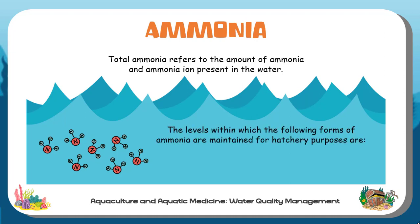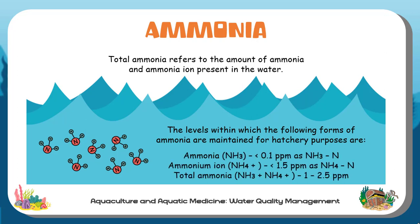The levels within the following forms of ammonia are maintained for hatchery purposes: ammonia should be less than 0.1 ppm as ammonia nitrogen, while ammonium ion should be less than 1.5 ppm as ammonia nitrogen. The total ammonia should be between 1 to 2.5 ppm.